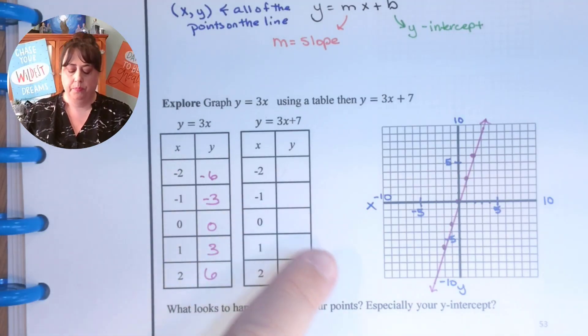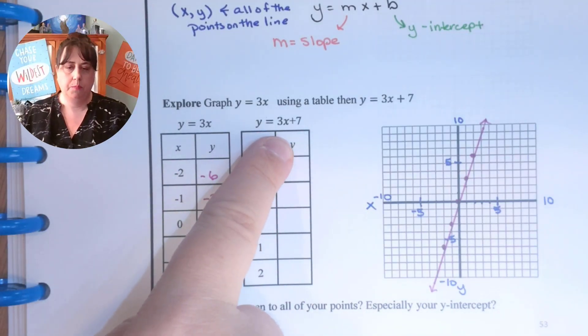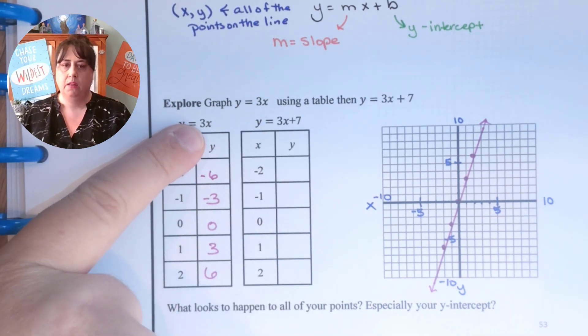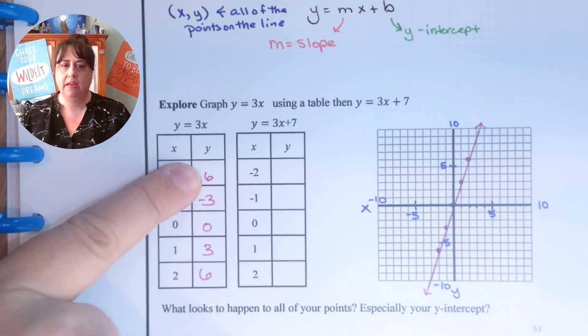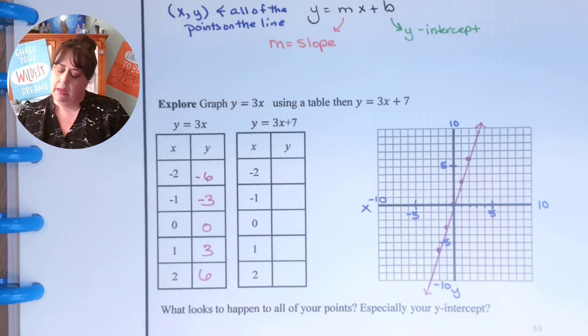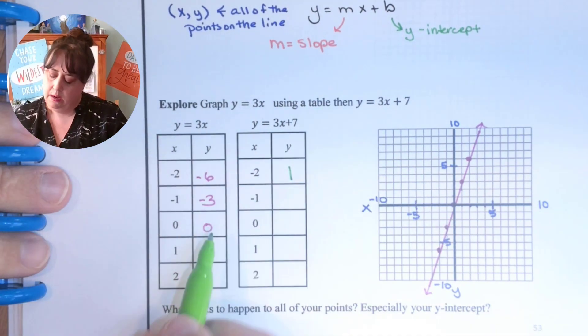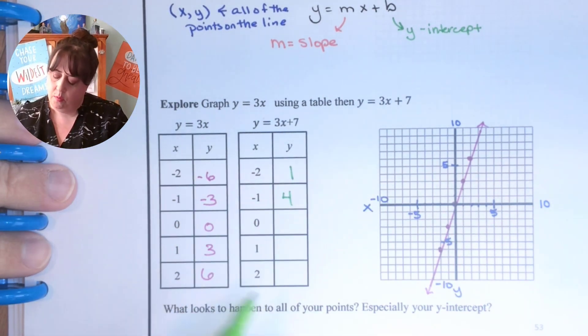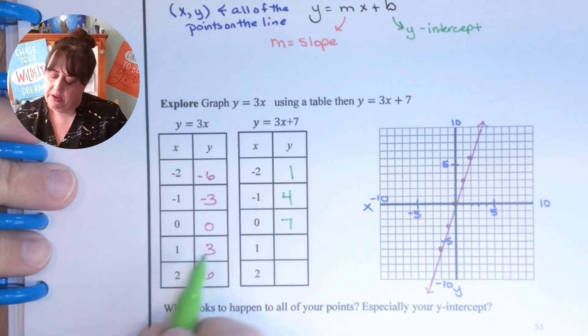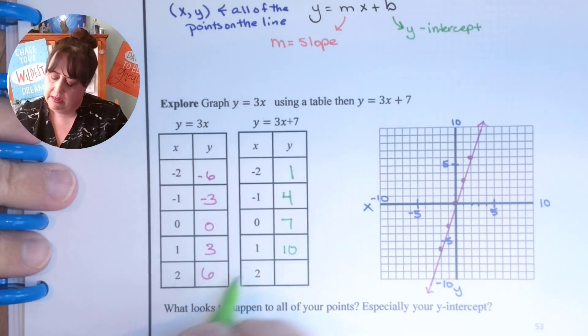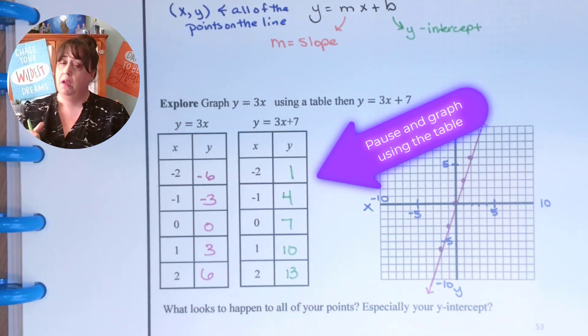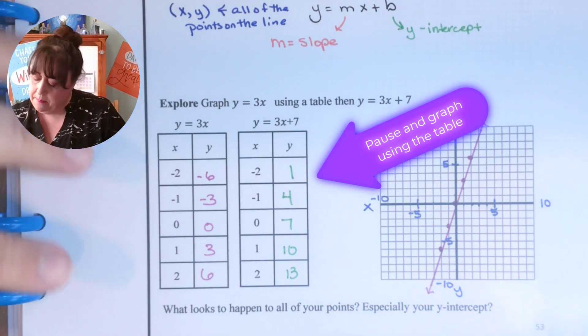And now let's look at the next one. All I did to get the next one was I took this number and then I added 7. Do you see that? 3x plus 7. So I'm just going to take negative 6 and add 7 to it and I get 1. Negative 3 plus 7 would be a 4. 0 plus 7 is 7. 3 plus 7 is 10. 6 plus 7 is 13. And now I'm going to graph that one. So go ahead and pause and do that and come back.